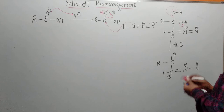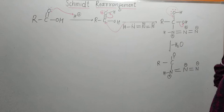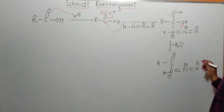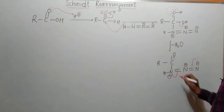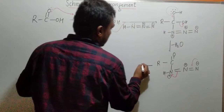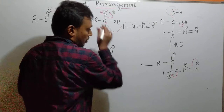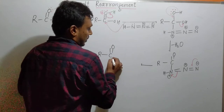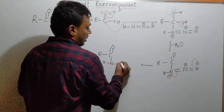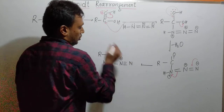So now here we have a positive charge and here a negative charge. The negative charge will push its electron pair inward, and this electron pair will shift to the nitrogen. From this we get another intermediate in which we have R-C(=O) on this side, then N-H, and then N≡N with a positive charge on this nitrogen.